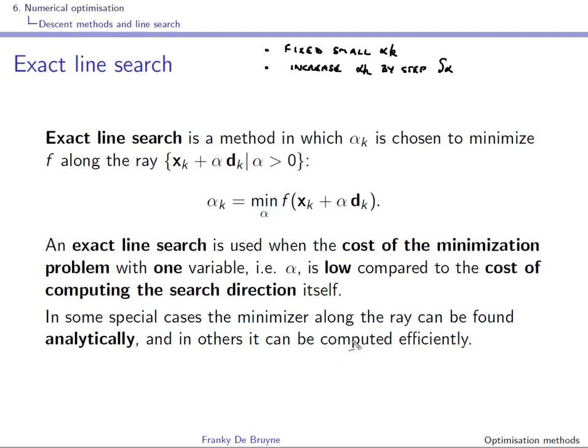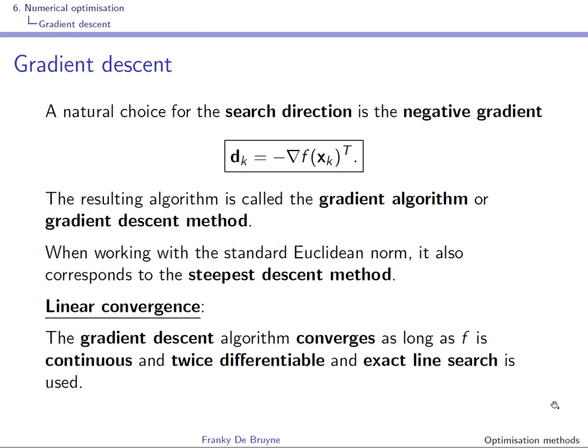A natural choice for the search direction is the negative gradient, and the resulting algorithm is called a gradient algorithm or gradient descent method.